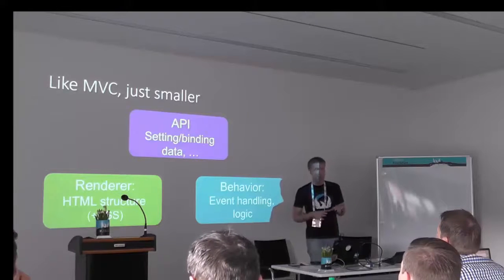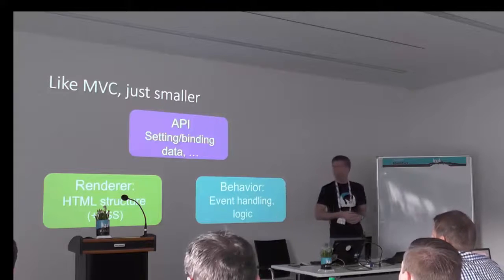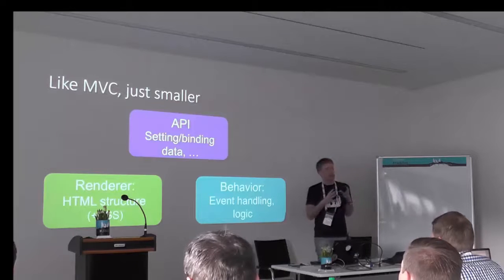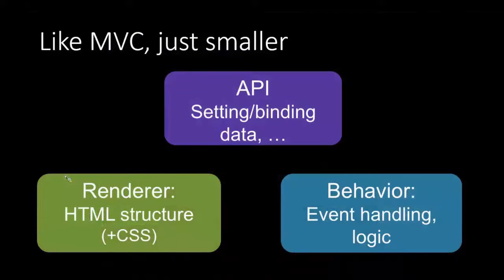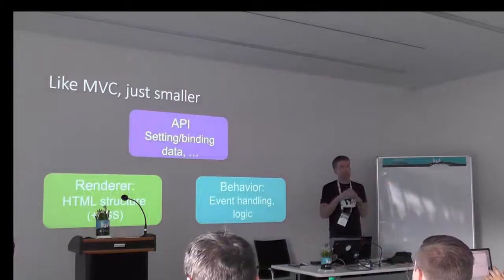Let's start with the basics. A control consists logically of three different parts. One is the control API — that's the properties, events, aggregations, and associations; everything that is the interface of the control to the application. Then we have a renderer part, responsible for creating the HTML and the structure of the control — everything that is visible, including CSS for styling. The third area is what we call the behavior: all the JavaScript code that handles user interaction and any logic inside the control. So more or less, this is like a model-view-controller in a very small package.